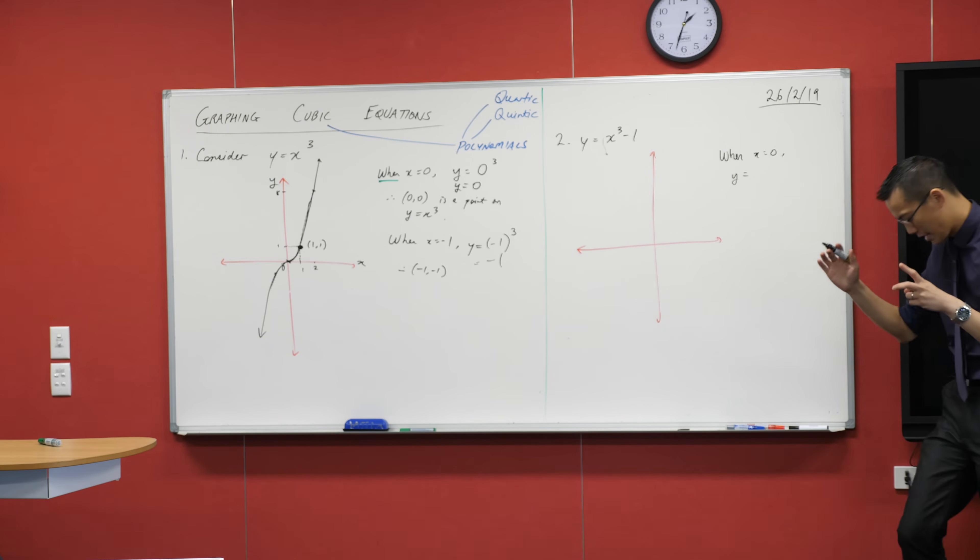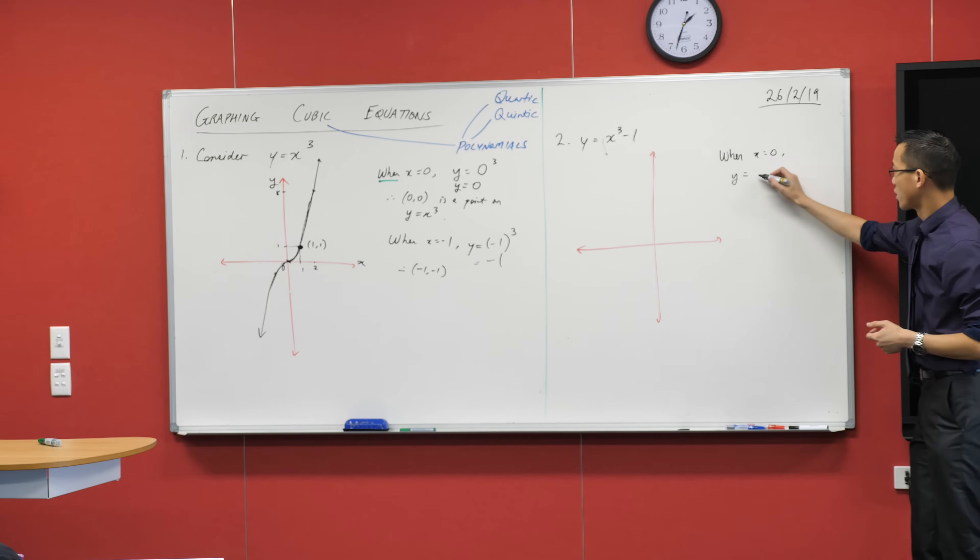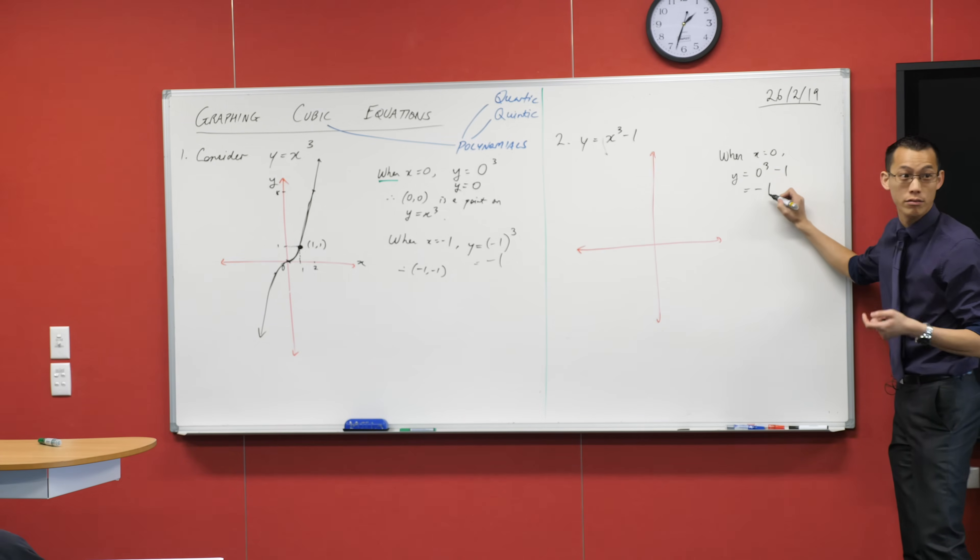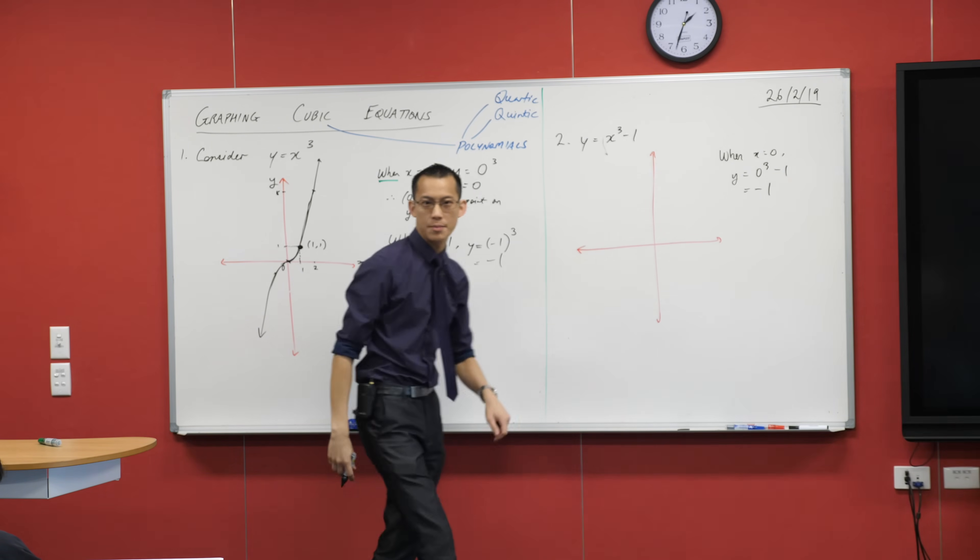Because I don't want to lean on my instincts if I'm not 100% confident in them. So I'm going to go 0 cubed minus 1, and that's negative 1. Yeah, you okay with that? So that's my y-intercept.